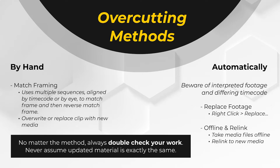Overcutting by hand literally means to cut in a new version of a clip over the top of the old version — so overcut it. Automatic ways of overcutting include replacing footage via right-click replace, or using an offline read link workflow. It's important you remember that no matter how you overcut your footage, you should always double-check your work.